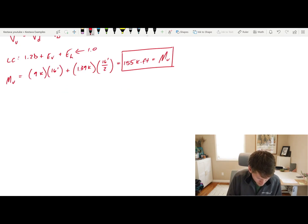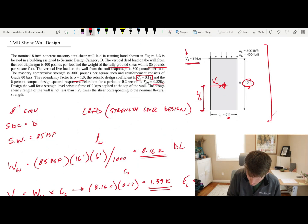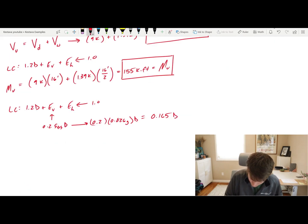Next, we're going to find our strength level axial load on the wall. That's going to be a load case, again, the same thing, but this time we actually have to do something. E sub H is equal to 1.0. EV breaks down to 0.2 SDS dead load. Above, did they give us SDS? They did. 0.826 g. That spits out 0.165 D. If we plug that back in for this part of the equation, that will spit out 1.2 D plus 0.165 D to get us a total of 1.365 D. So we can use that for our factor for our axial load.